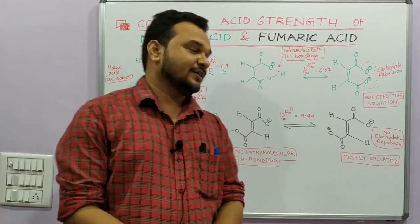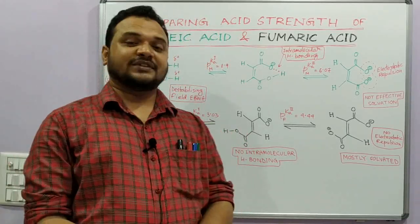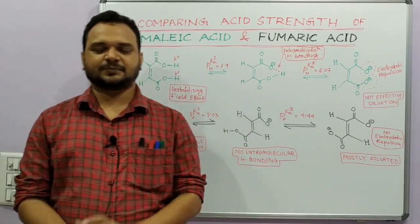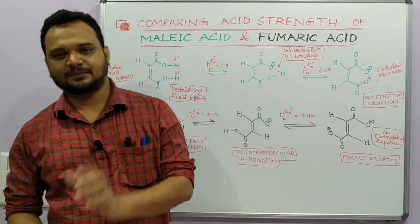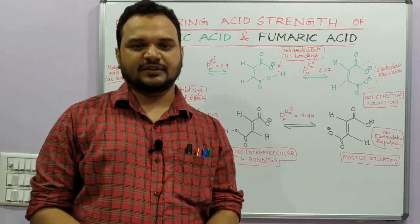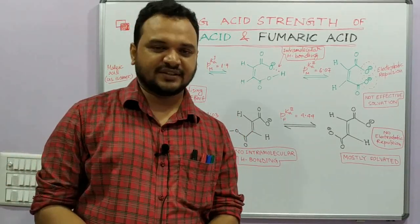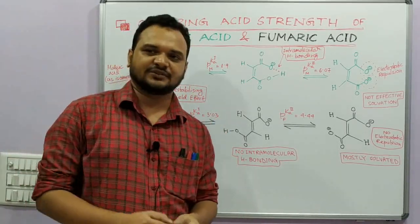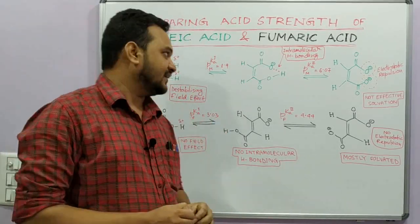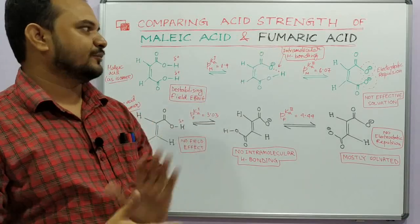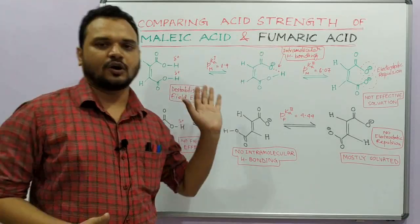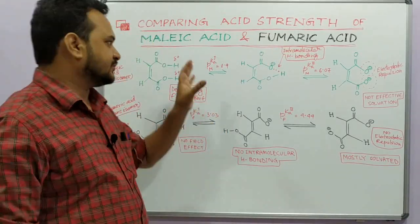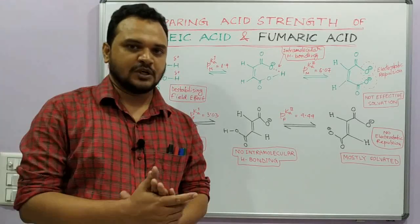Hello everyone. As I promised in the last video, I will be coming with a special example for the comparison of acidic strength. I gave a small hint at the end of that video — maleic acid and fumaric acid. Both of them are dicarboxylic acids, meaning both have two carboxyl groups.